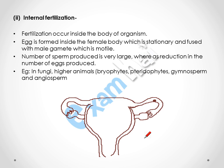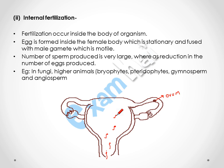In internal fertilization, the fertilization occurs inside the body of the female organism. The ovum is formed inside the body of the female, which is stationary, and fuses with the male gamete which is motile. At the time of mating, the sperms enter into the body of the female. Sperms have a flagella or tail through which they can swim and reach towards the female gamete, the ovum, and then fusion takes place forming the zygote.